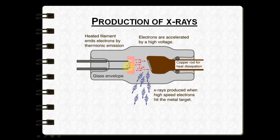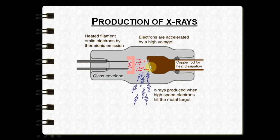Once the filament is heated, it undergoes thermionic emission and an electron cloud forms in the focusing cup. When the exposure button is pressed, the high voltage circuit is activated and this electron cloud is accelerated across the x-ray tube, hitting the target on the anode. When the electrons strike the tungsten target, kinetic energy is converted to x-ray energy and heat — 99% is dissipated as heat, carried away by the copper stem and absorbed by the insulating oil.